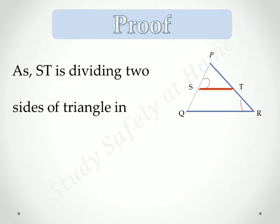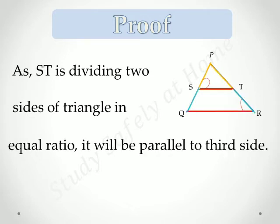As ST, observe, is dividing two sides of triangle in equal ratio, means PS by SQ is equal to PT by TR, that has been given.